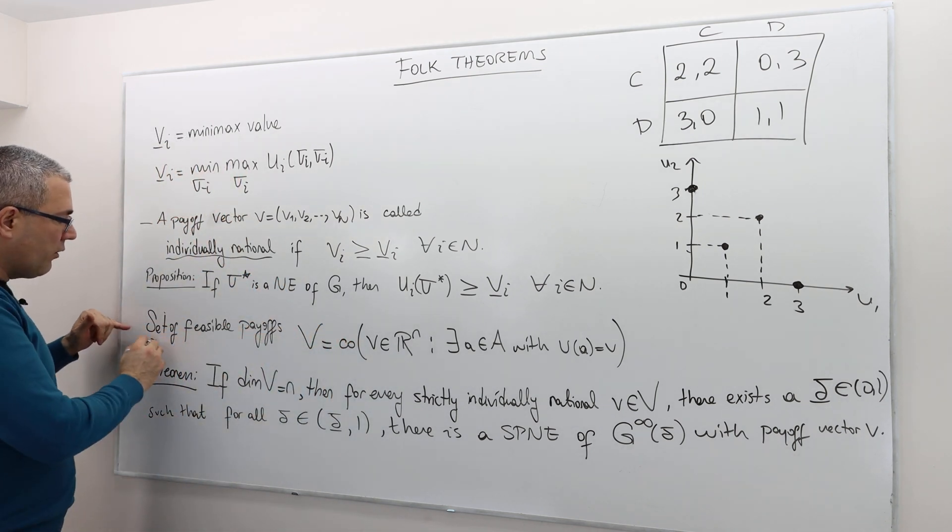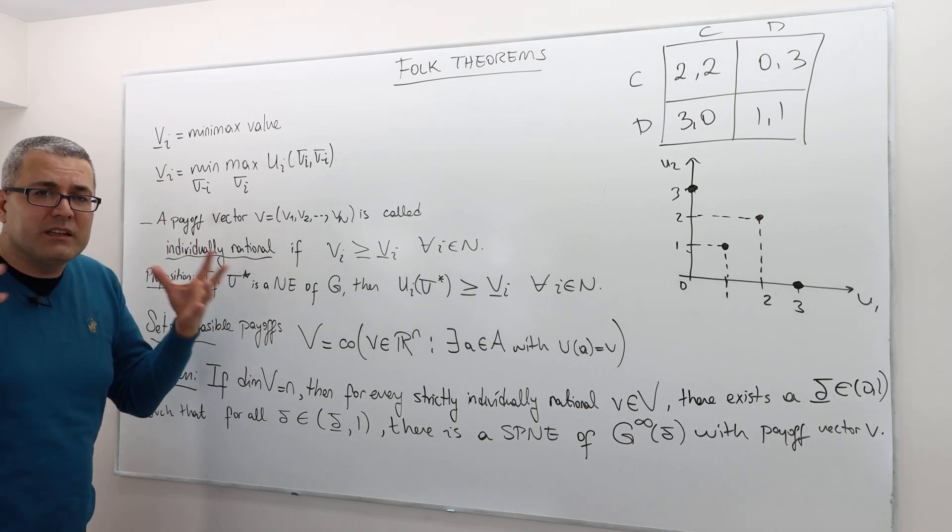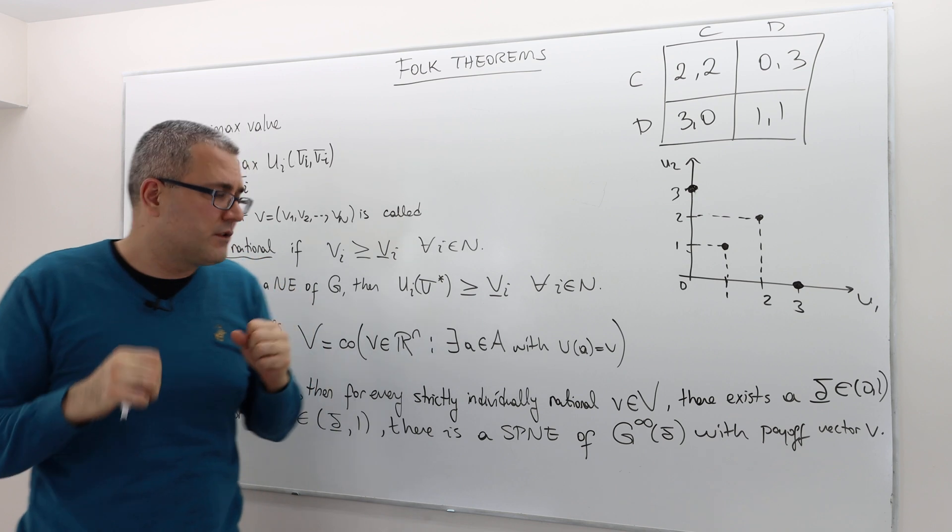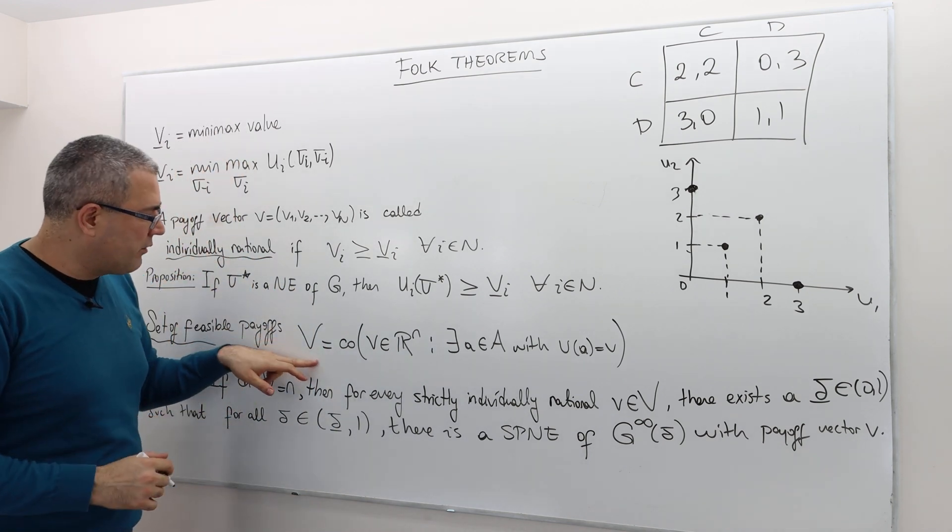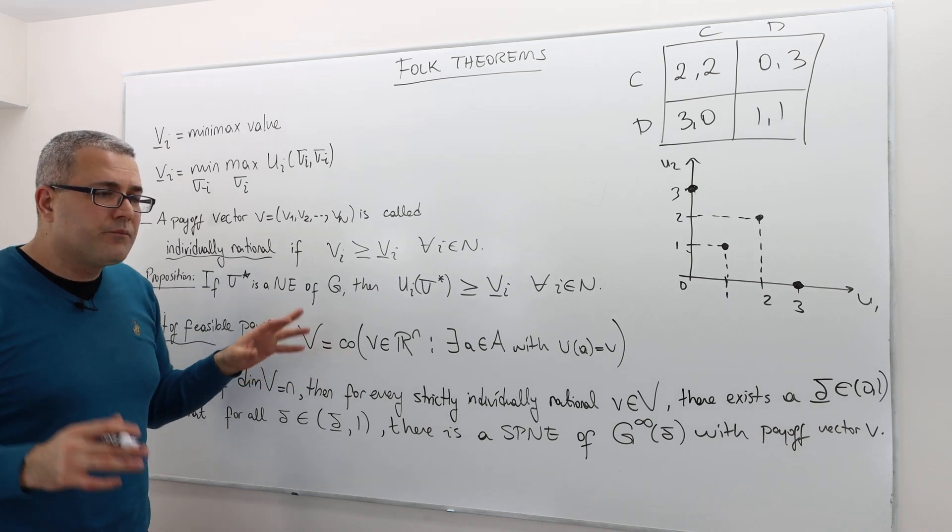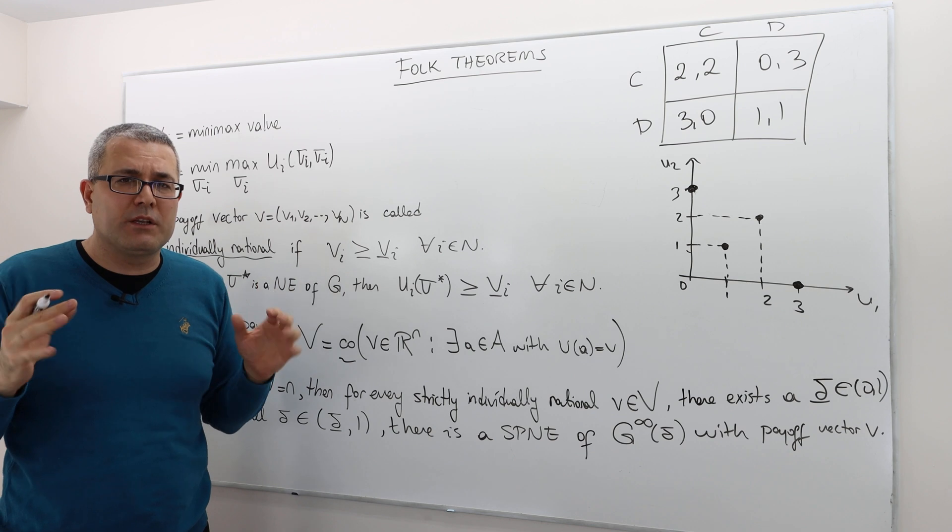Okay. Well, we're going to define set of feasible payoffs in a game, in a repeated game. All right. But obviously, we're talking about the stage game payoffs, the average payoffs. So we're going to denote this set of feasible payoffs by capital V. So it's the, this is co, basically a convex combination.